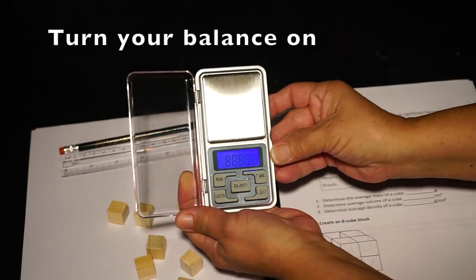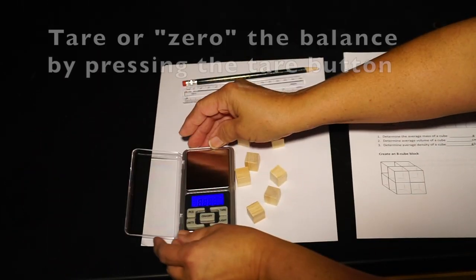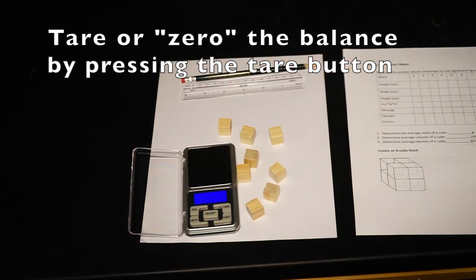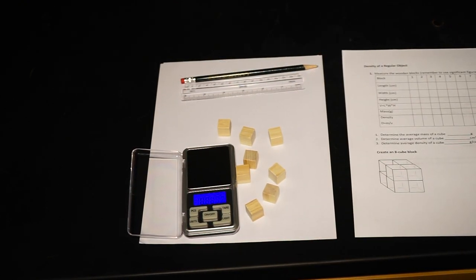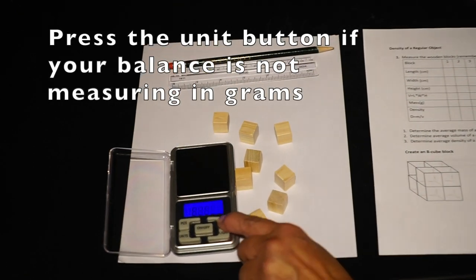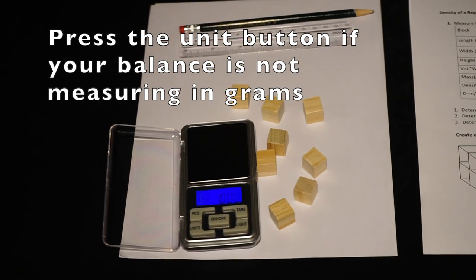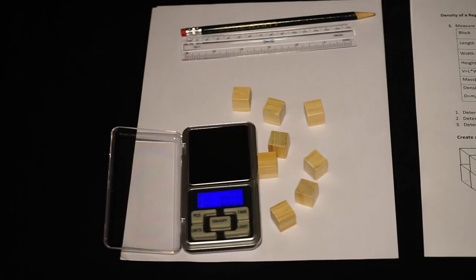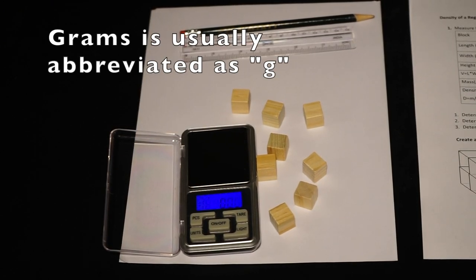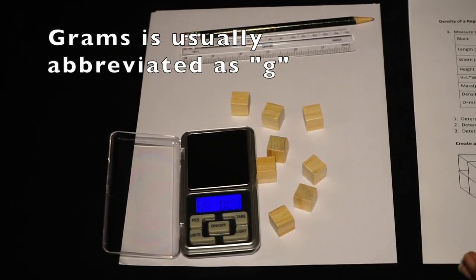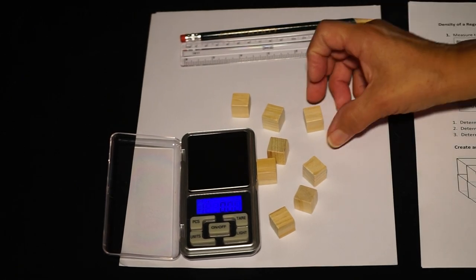Density of a regular object: First turn your balance on by pressing the power button once you have placed it on a flat level surface. Press the tare button to zero the balance. This tells the balance you're starting with nothing. Be sure the balance is in the unit of grams. If it is not, press the unit button until grams is displayed, usually abbreviated as G.